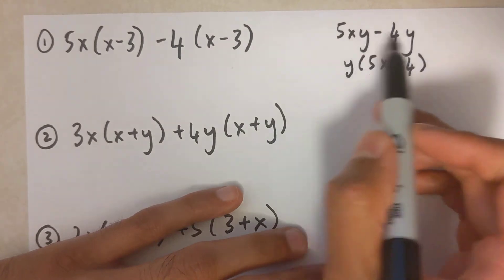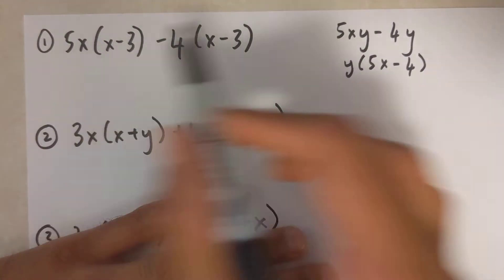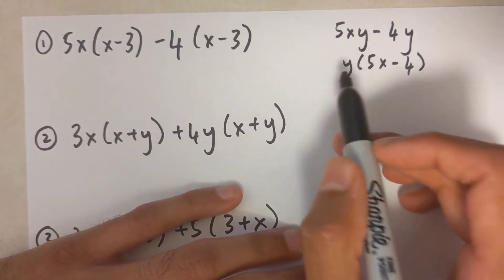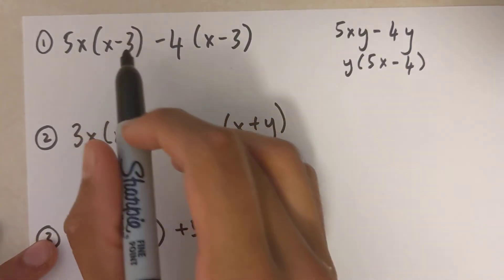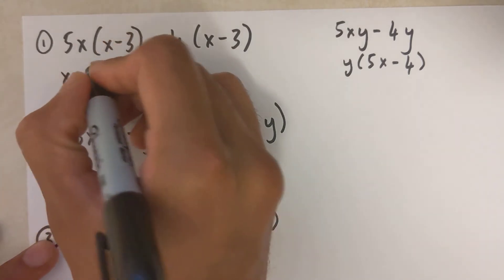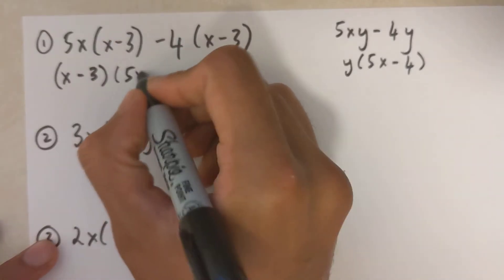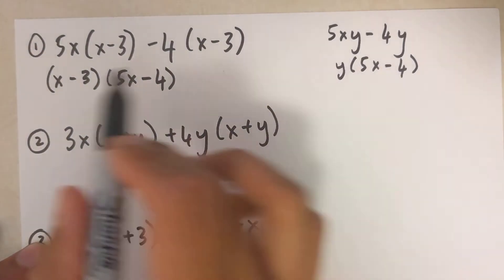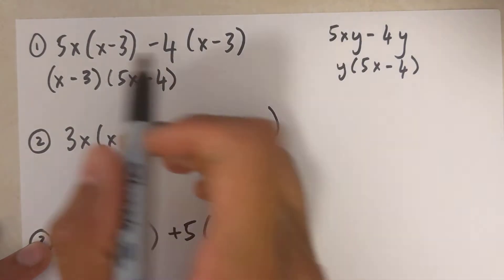Now I want you to pretend that the y in this question is the same as x minus 3, and you'll notice the questions are identical. So similar to this question where I could common factor out a y, over here I can common factor out an x minus 3. I take out an x minus 3 and I'm left with 5x minus 4 — very similar to the first question.